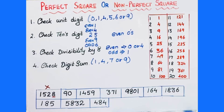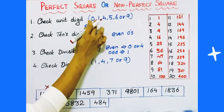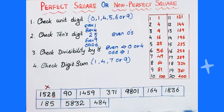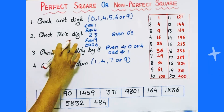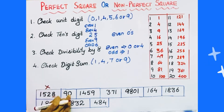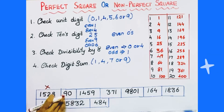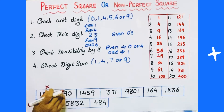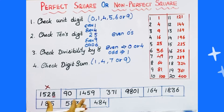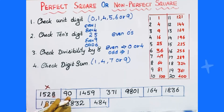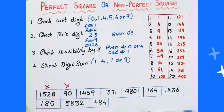Next number is 90. Check the unit digit — it is 0, so it can be. Next test: check the tens place. If the unit digit is 0, the tens place should also be 0 — meaning it should have an even number of zeros. But here the number of zeros is odd. So it is not a perfect square number.